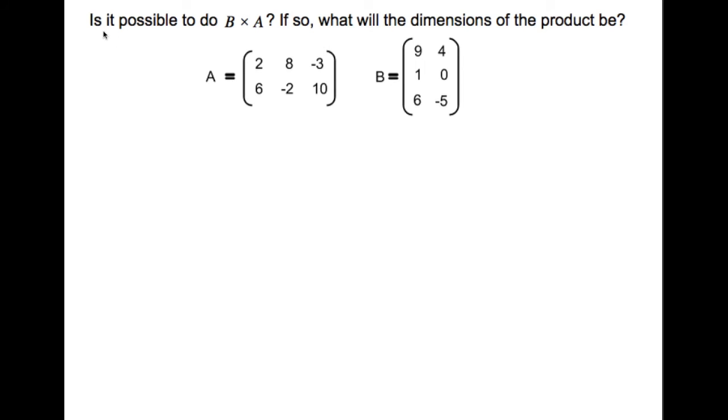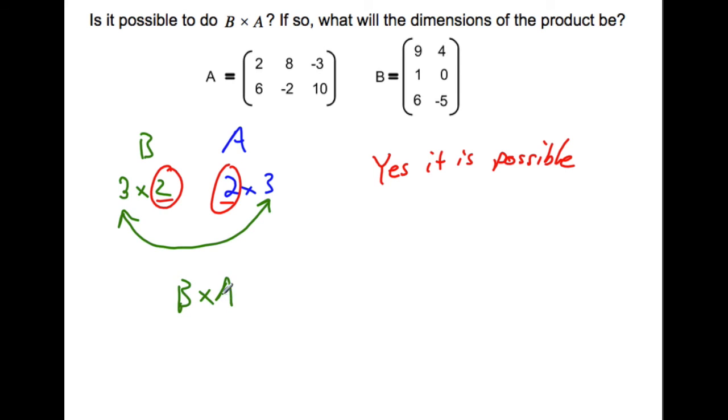A couple more details. This one asks: is it possible to do B times A? B is a 3 by 2, and A is a 2 by 3. Do these inner dimensions match up? They do, so yes, it is possible. What will the dimensions of the product be? Matching the outer dimensions, B times A will be a 3 by 3.